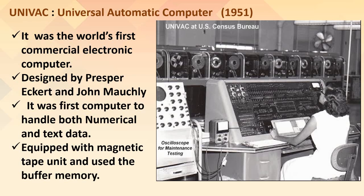UNIVAC was the first computer to handle both numerical and text data. It was equipped with a magnetic tape unit and used buffer memory. You can see in the picture the magnetic tape in a circular shape.